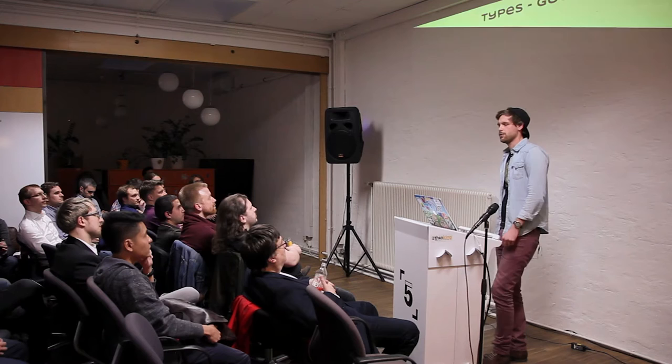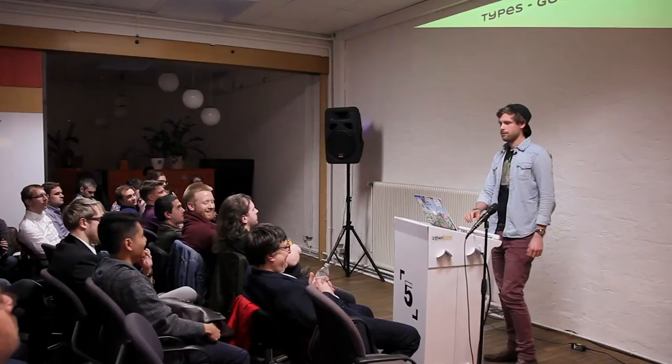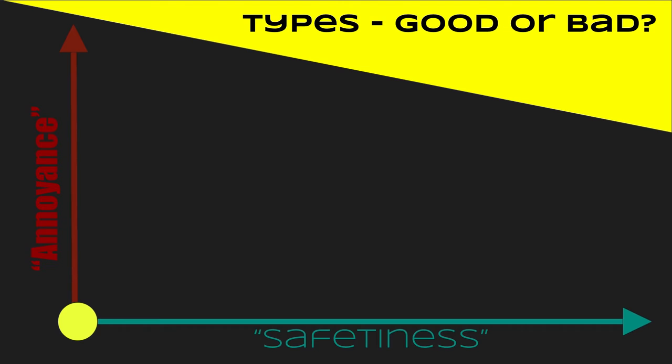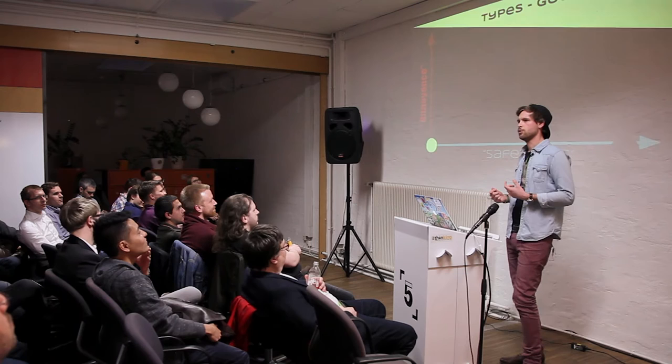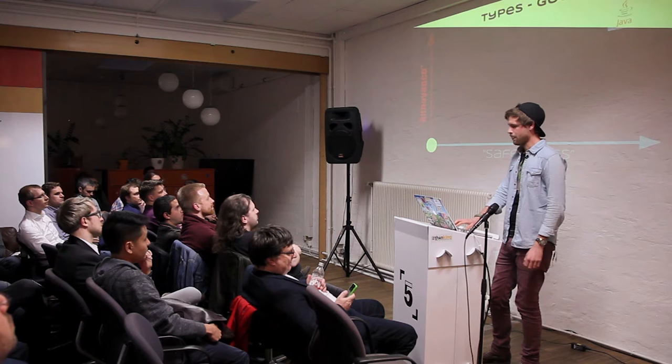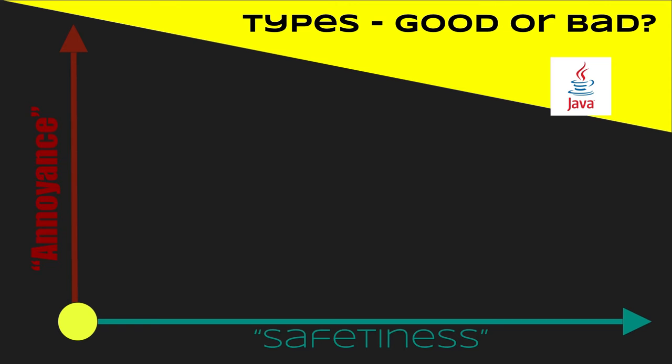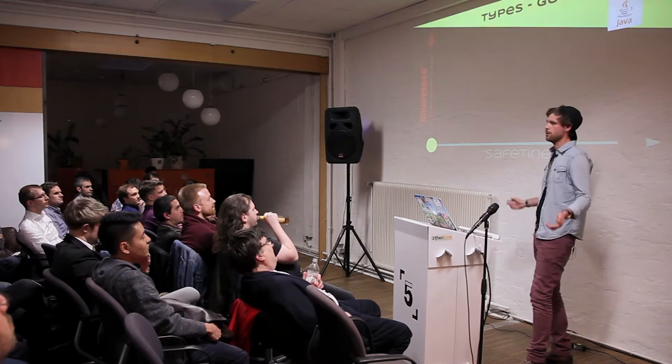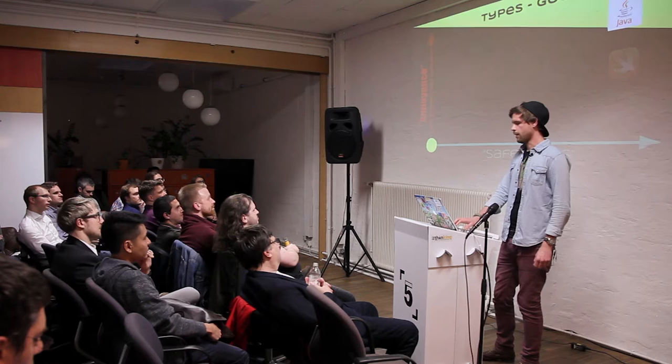First I wanted to introduce types — are they good or bad? I'll measure them by safetiness and by annoyance, where annoyance means how tedious it is to get code running and to introduce or work with values. For instance, Java is great because it's super safe, but it's sometimes very hard to handle the APIs — without code completion you're kind of lost.